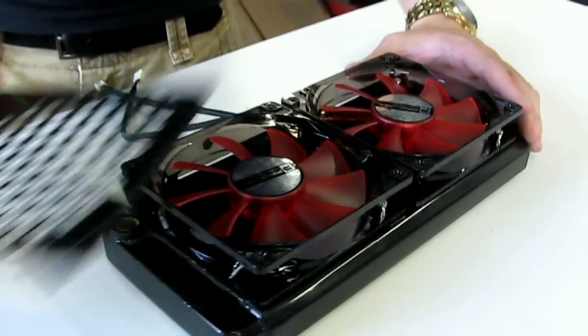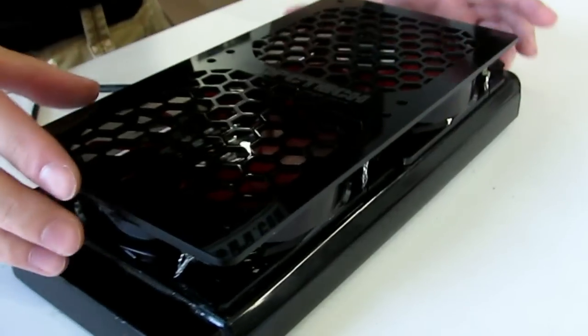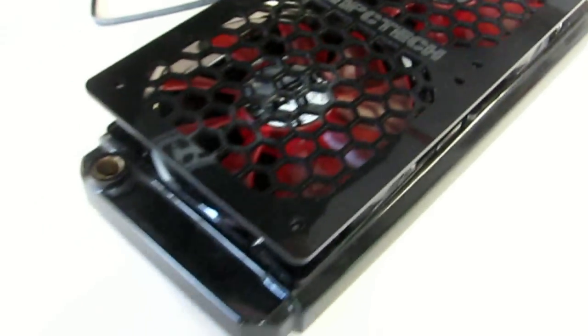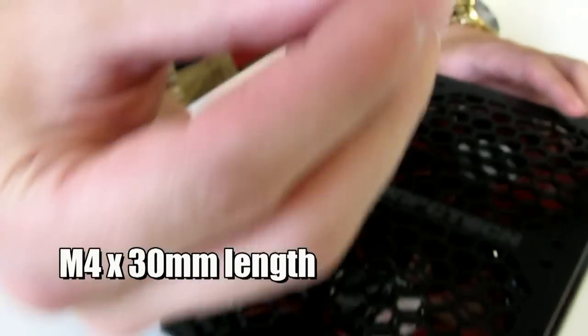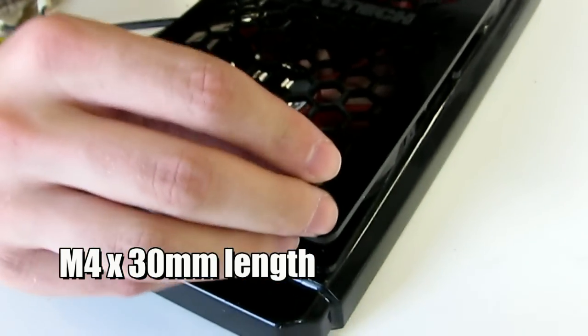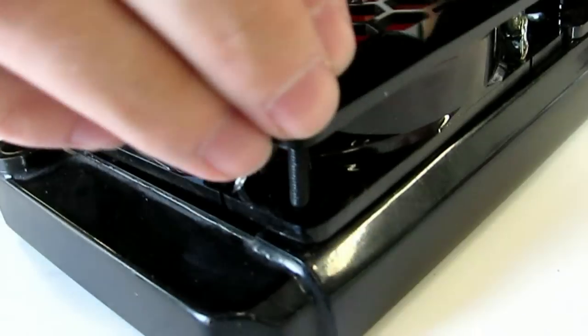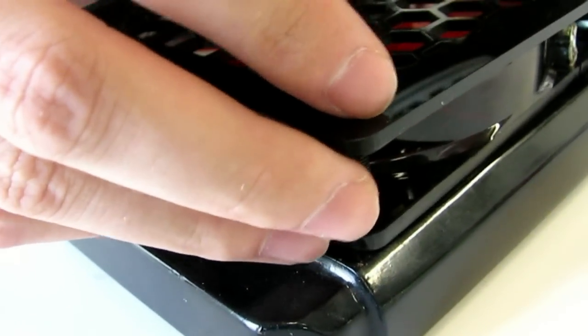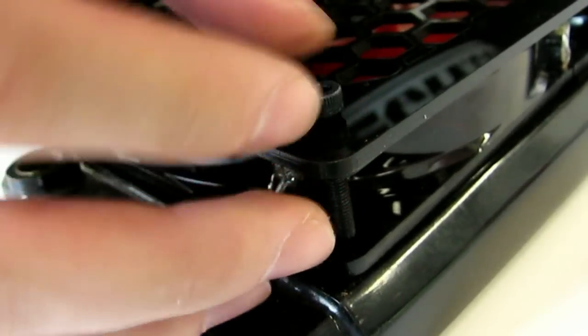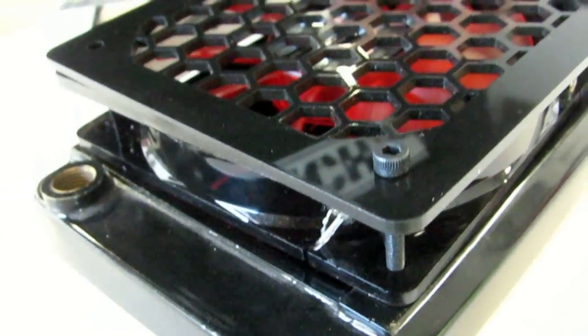So then I'm going to come over here with the grill and line things up a little bit and then to fasten this down I've got M4 thread by 30 millimeter socket head machine screws and so I'm going to start in one corner and this can kind of be a pain because you need to just kind of wiggle things a little bit to get it to sit down and then move along here and do the same thing.